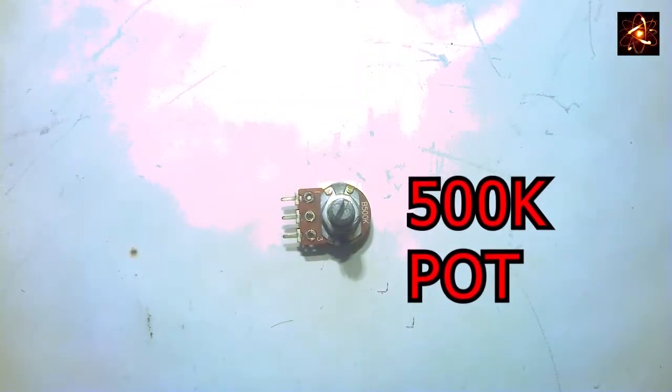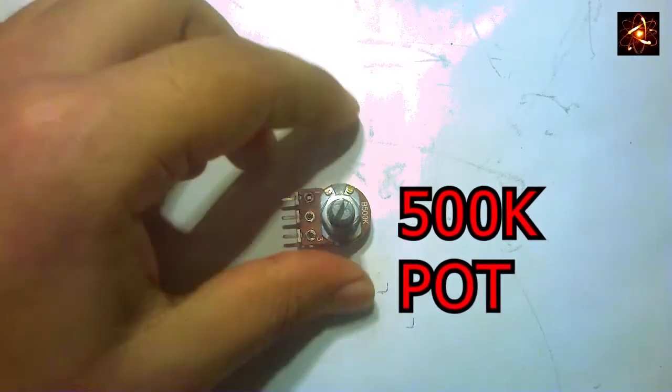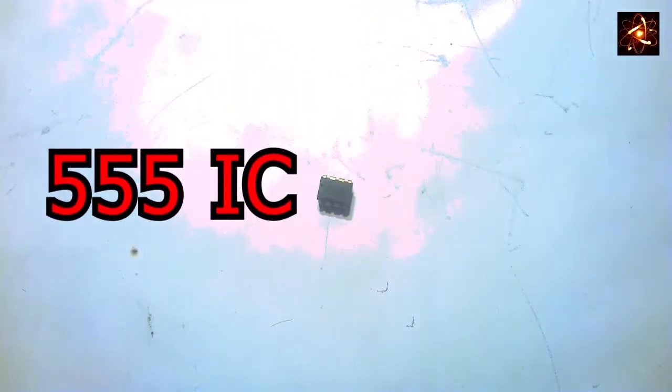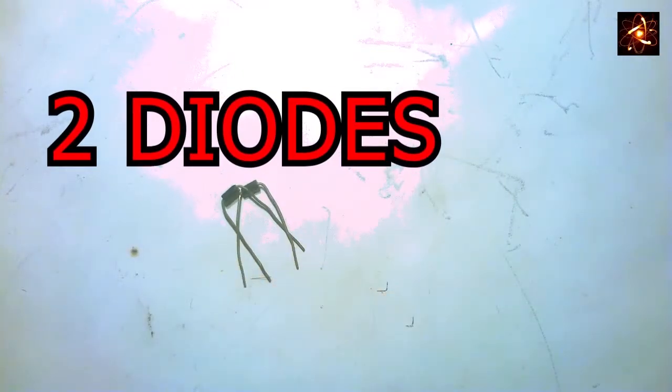We also need a 500k variable resistor, a TPO5 timer IC, and two diodes.